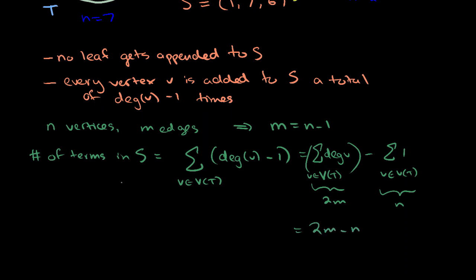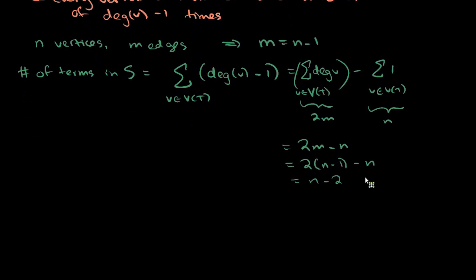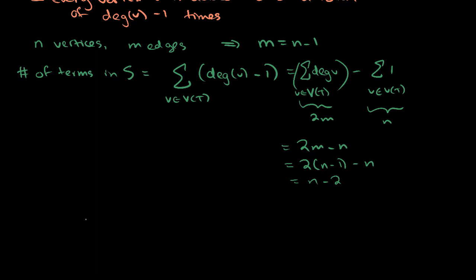So, we have 2m minus n. You might think that sounds not so straightforward, because that's not what you were looking for. You were trying to show that this sequence has length n minus 2. But you're almost there, because remember that it's a tree. So, you have 2 times n minus 1 minus n. This gives us 2n minus the n. So, just n. And then we have our minus 2. So I hope that I've been able to convince you that, in fact, given a labeled tree, you can easily make a Prüfer sequence. And, in fact, that Prüfer sequence will have length n minus 2.